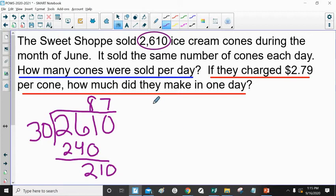Now I have to figure out how much money they make in a day. Well, I know the total number of cones they sell and I know how much they charge per cone, so I have to multiply these two numbers together and that's going to give me my total.